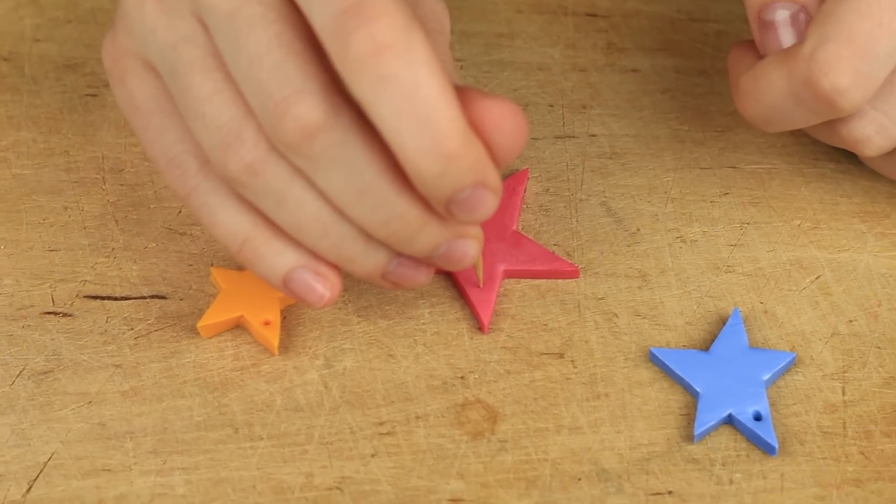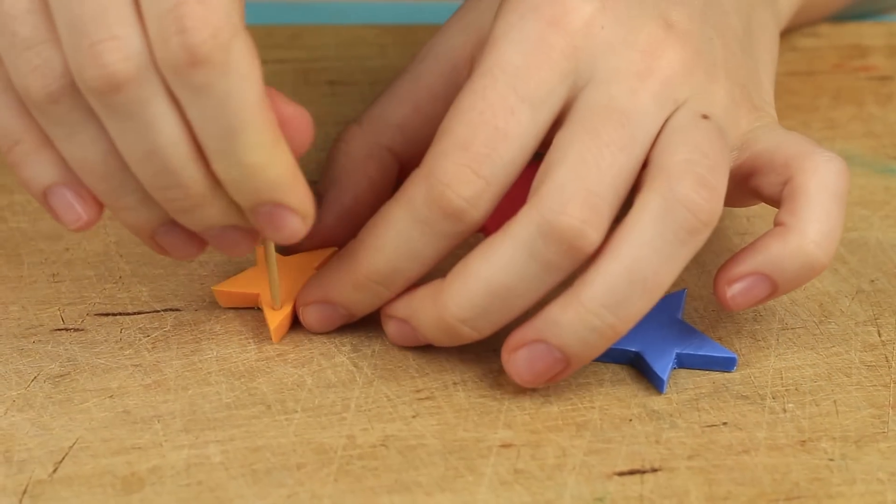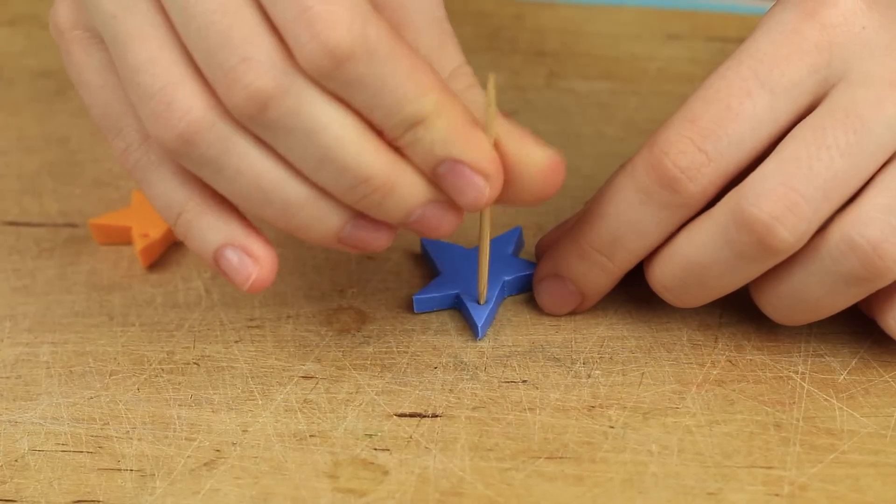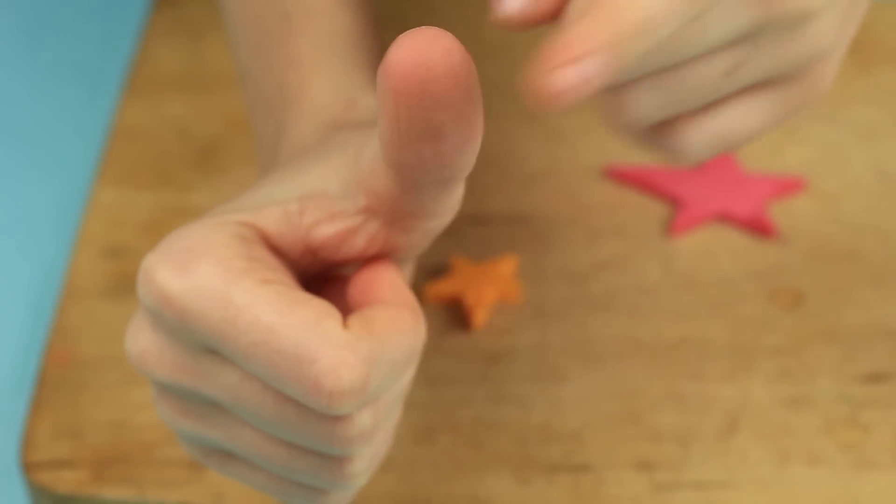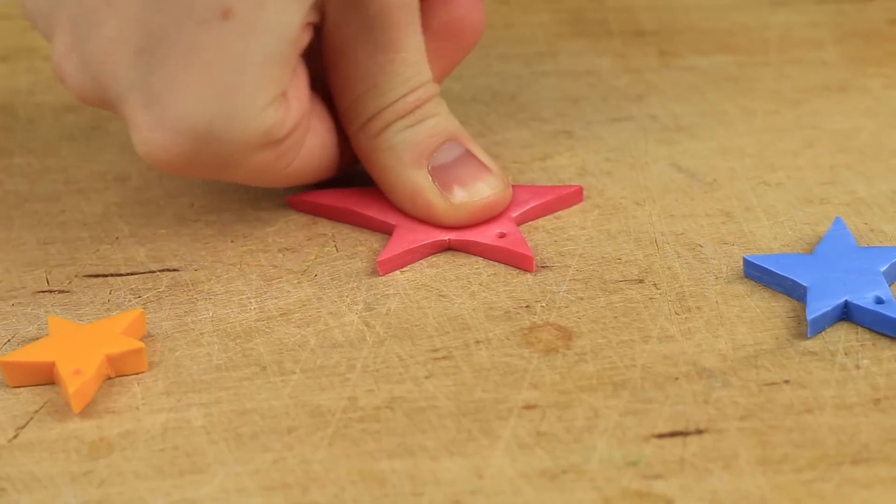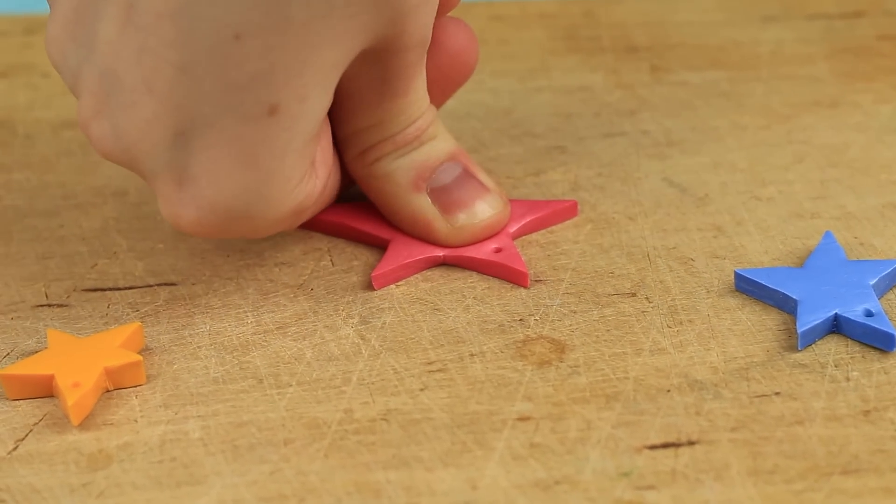Pierce the stars to hang on rings. Use a toothpick. And the central element of the craft is a fingerprint. Put a thumbprint on the biggest pink star. Press down well to make it clear.